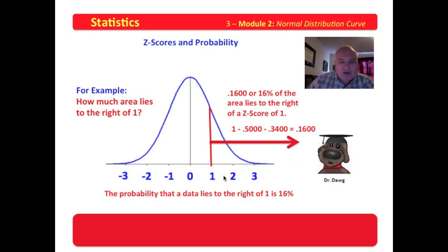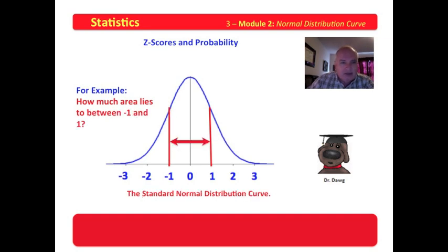So if we randomly selected the data and looked at the z-score, we have a 16 percent possibility that it would fall into this region and an 84 percent possibility that it would fall into that region.